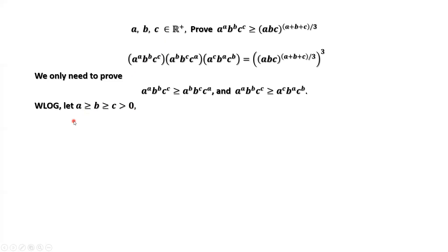Why can we do this? From the given inequality, if we swap any two variables — for example, a and b — we will have the same inequality. This means this assumption is legal.